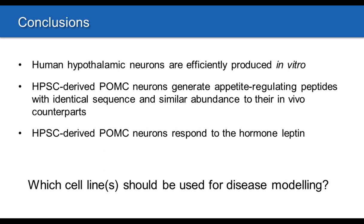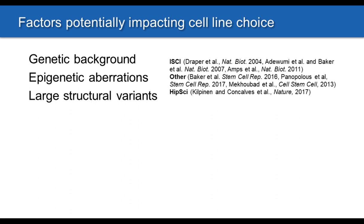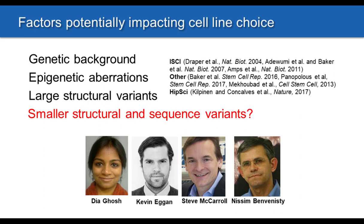The question that remains is which cell lines should be used for disease modeling. Previous studies have shown that genetic background can be important, and that over time in culture, human pluripotent stem cell lines can acquire epigenetic aberrations such as erosion of X chromosome inactivation, and large structural variants such as copy number variants and aneuploidy, which can affect hundreds or thousands of genes. However, relatively little was known about smaller structural variants or sequence variants, which can have a potent effect on cellular phenotypes unrelated to the disease one is wishing to study.